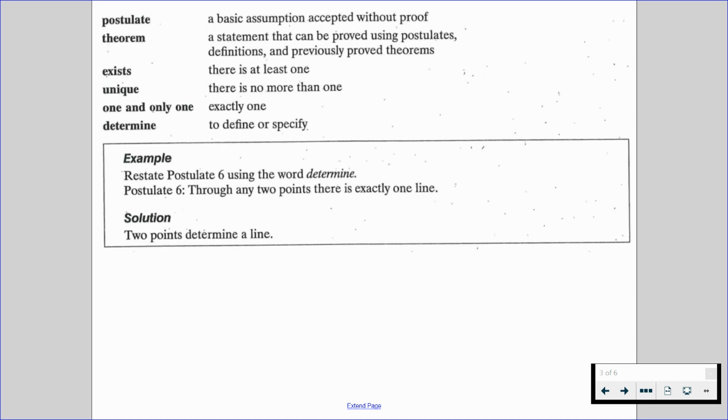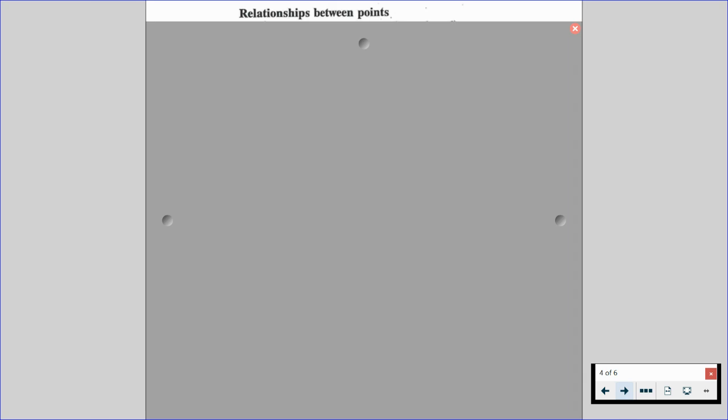Now there's a lot more relationships that we have to talk about. So let's talk about the relationships between points. And this is a long list. So we have two points must be collinear. They will always be collinear.